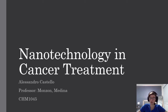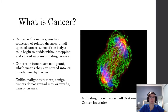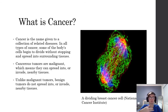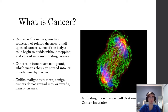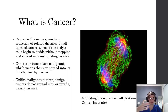First of all, we need to understand what is cancer. Cancer is the name given to a collection of related diseases. In all types of cancer, some of the body's cells begin to divide without stopping and spread into surrounding tissues. This means that it could vary between lung cancer, colon cancer, breast cancer, etc.